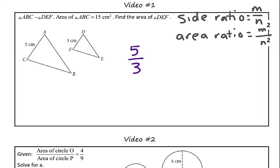However, if we want to solve for area, we need the ratio of the areas. So to do this, we are going to go ahead and square each of these quantities. Therefore, the ratio of the areas of these two similar polygons will be 25 over 9.